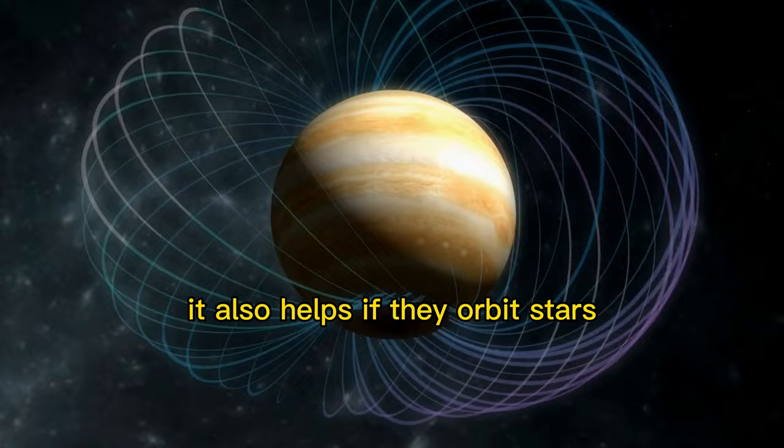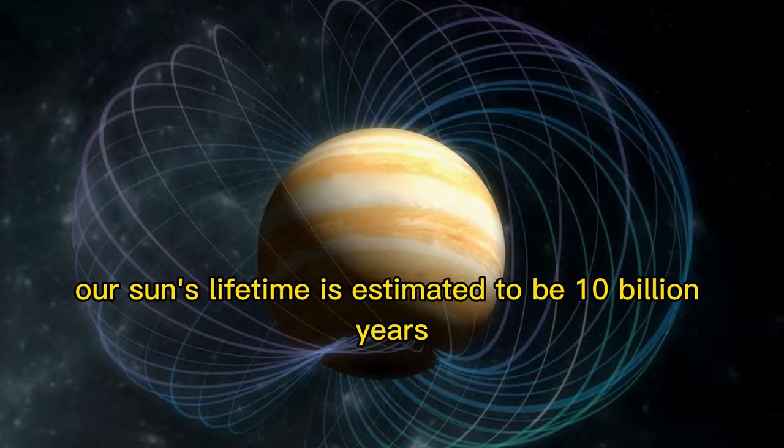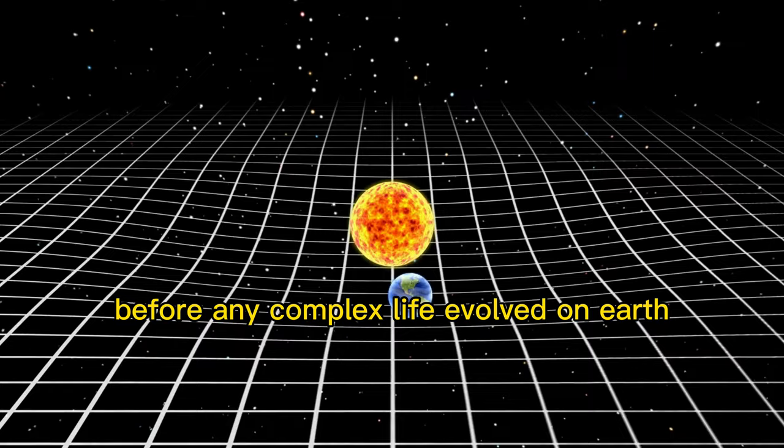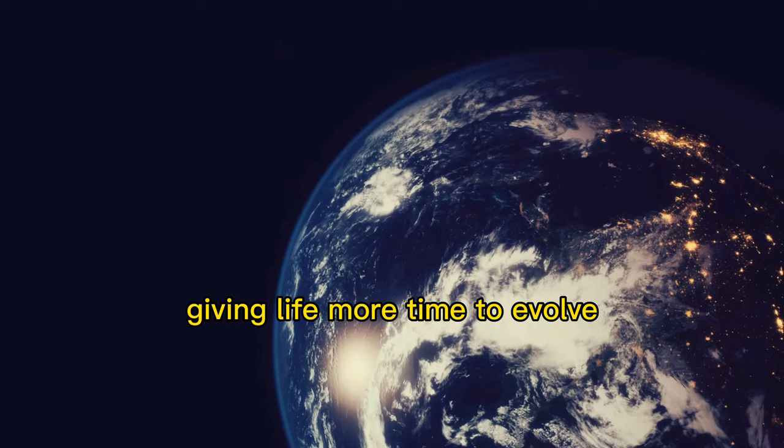It also helps if they orbit stars older than the Sun, with longer lifespans. Our Sun's lifetime is estimated to be 10 billion years, and it took about 4 billion of those years before any complex life evolved on Earth. But some other stars can live much longer, giving life more time to evolve.